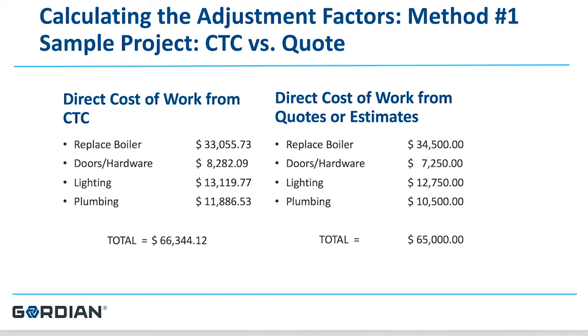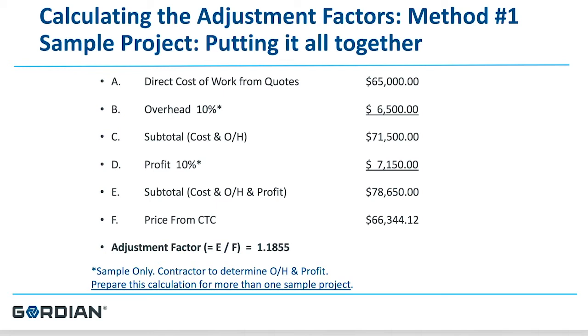Now take into account your overhead and profit. Take direct costs of $65,000; add overhead of $6,500 (10%) and profit of another 10% — your subtotal is $78,650. The price book, however, is offering you $66,344.12. To establish your coefficient, divide your subtotal of $78,650 by the CTC price of $66,344.12, giving you an adjustment factor of 1.1855. Do that on two, three, or four projects — this will give you a value for the book and tell you what that adjustment factor needs to be.